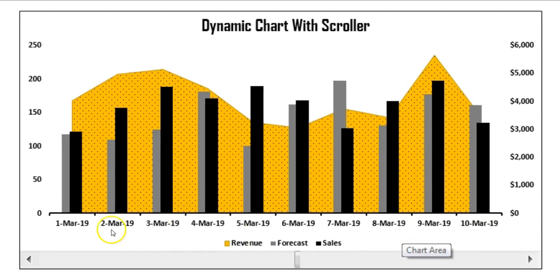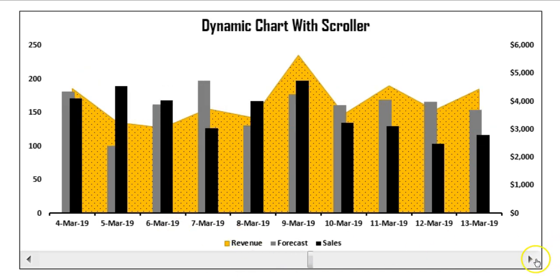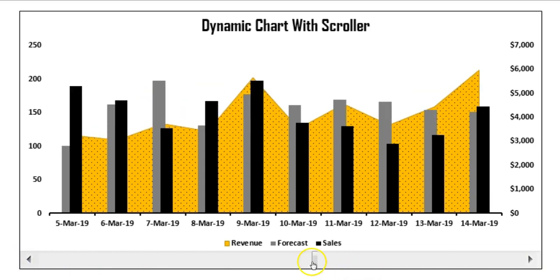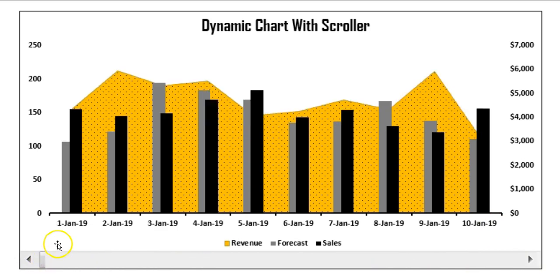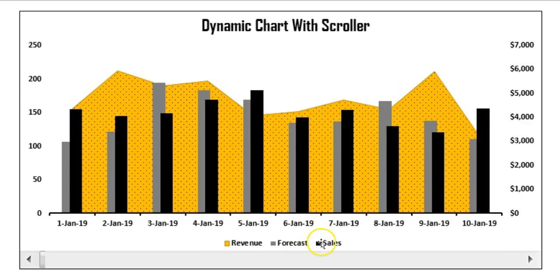I am displaying only 10 days — you can see it is from 1st March to 10th March. I have added a scroller so you can scroll the chart and the date will change to the right or left side. If you move it to the end it displays data till 30th April 2019, and at the starting point it displays from 1st January 2019. Revenue is shown in the area chart, forecast in gray, and sales in black columns. This is very useful whenever you have multiple data points that don't fit in your chart.